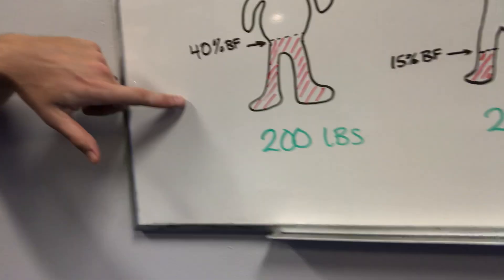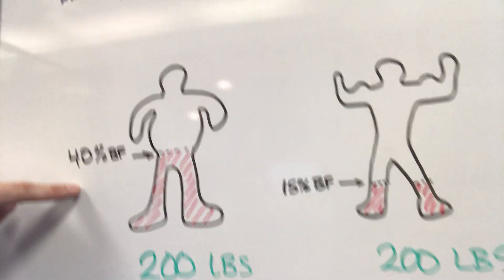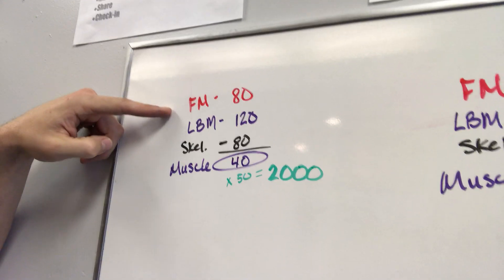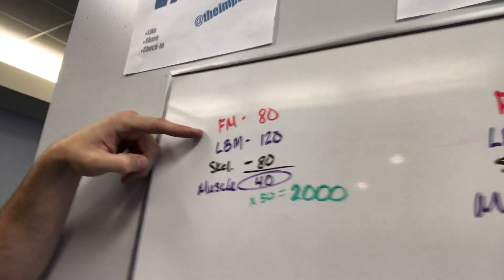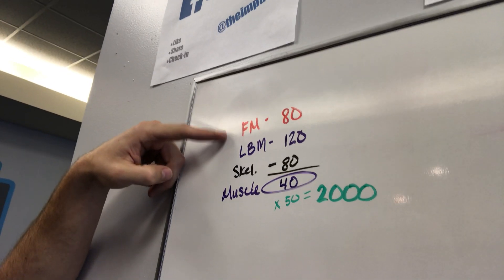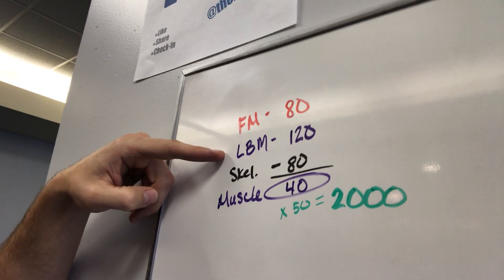Alright, I wanna show you the math behind all this. So let's say this person who's 200 pounds, same as this person, they're 40% body fat. That means their fat mass is 80 pounds of body fat. This is not a healthy body fat number. We wanna make sure that this gets lower. But what's left over? Alright, lean body mass of 120 pounds.